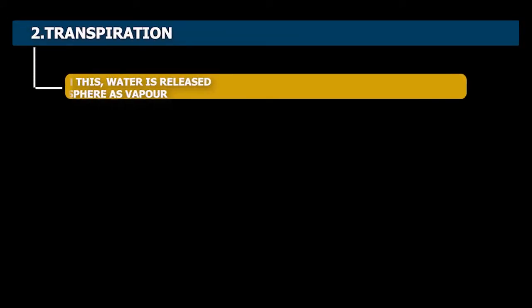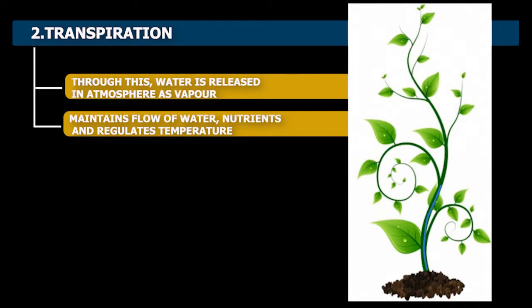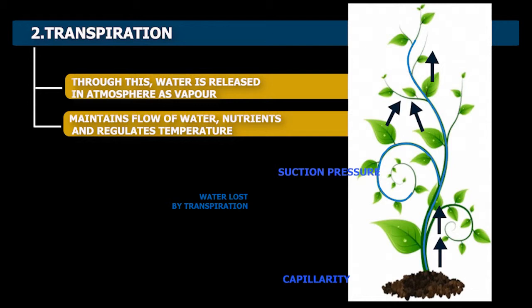2. Transpiration. By this process, water gets released to atmosphere in the form of vapor. Because of transpiration, plants maintain the flow of fresh water and nutrients which helps in plant growth and temperature regulation.